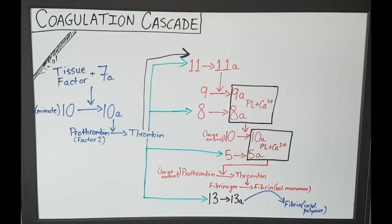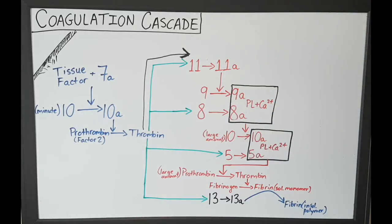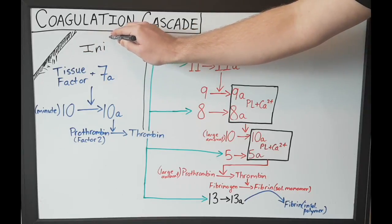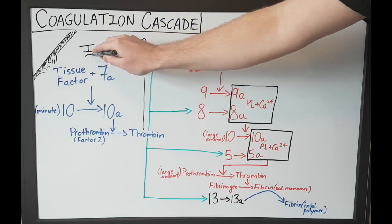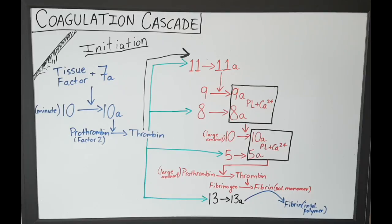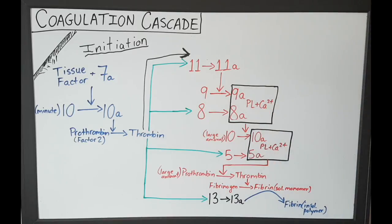So once you get to thrombin, that's kind of where the ball gets rolling. Thrombin is kind of like the boss of the pathway — the delegator, the DJ of the pathway — it gets everything going. Once you get to that first small amount of thrombin, you've officially finished the initiation phase of the pathway. So it's just getting started, and once you get that little minute amount of thrombin produced, the pathway gets started and everything gets rolling.